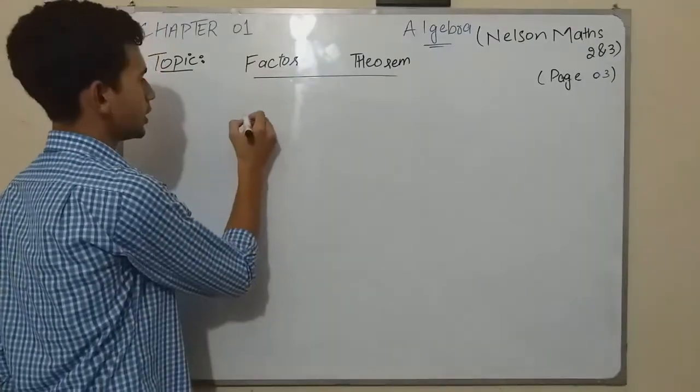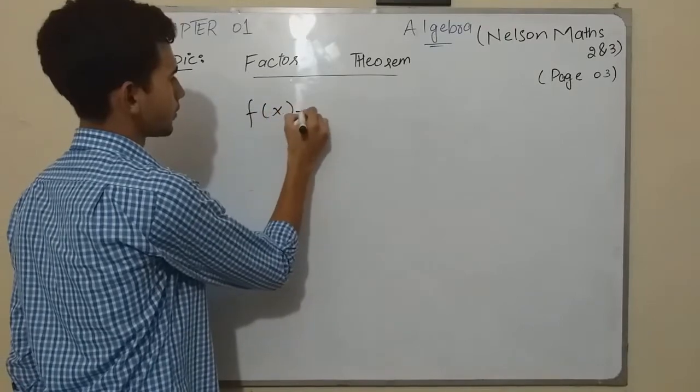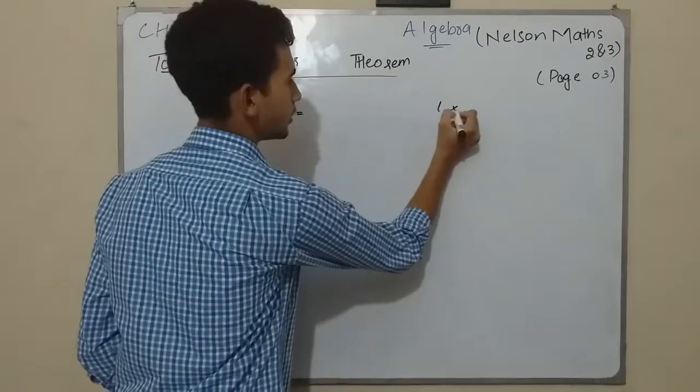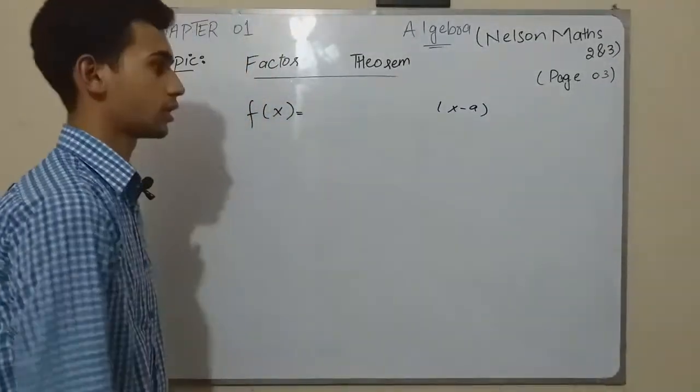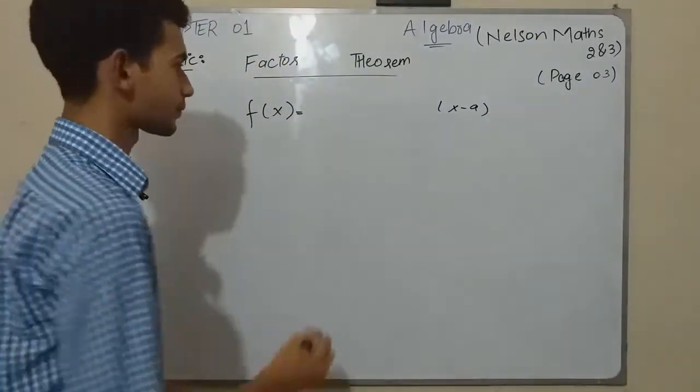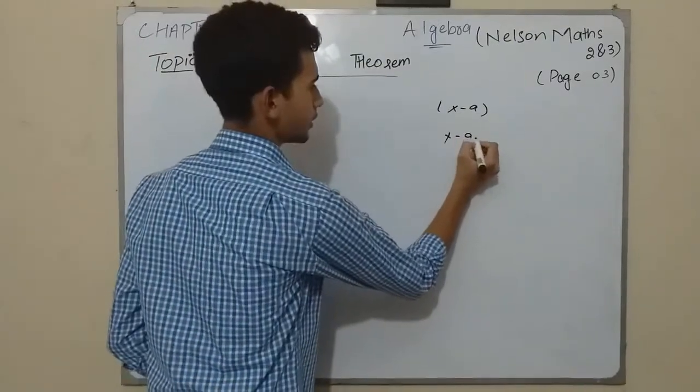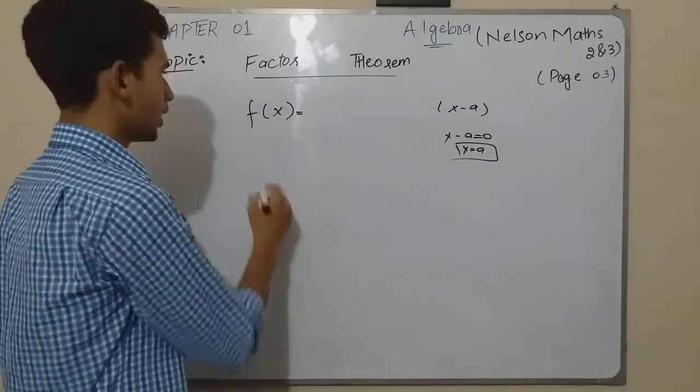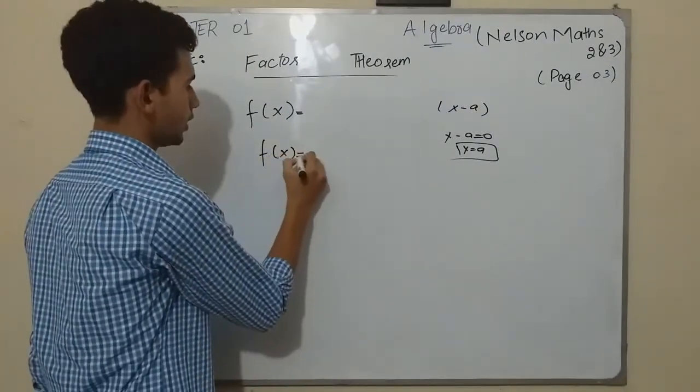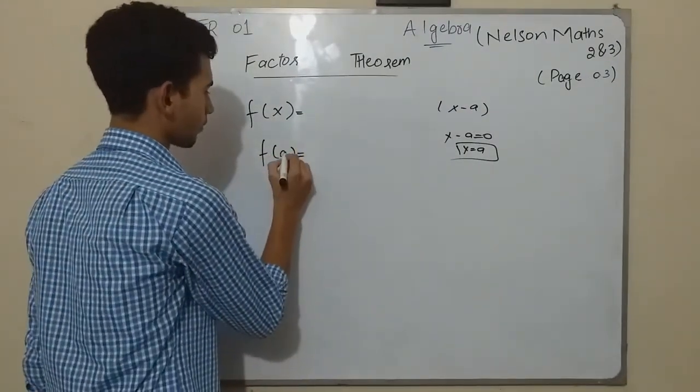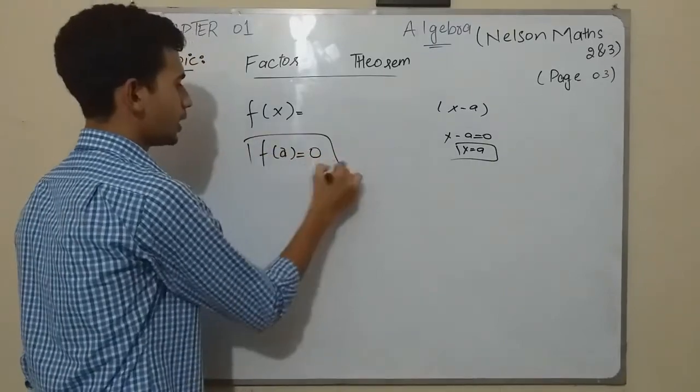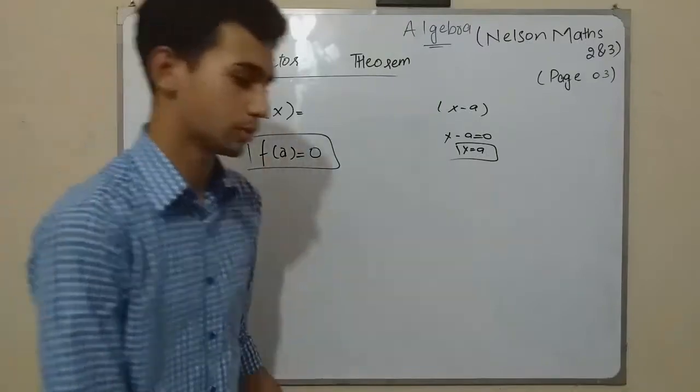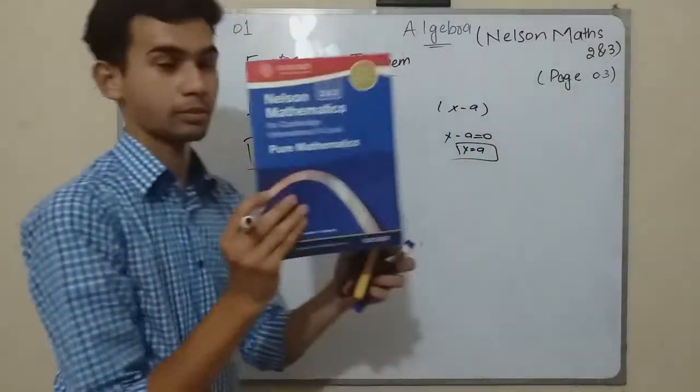Let's look towards the general form of the Factor Theorem. f(x) is a polynomial function, suppose, and this is the linear expression which we are going to put the value in. So x - a = 0, x = a. It means the value of x is a. I'm going to put this in this expression. If your remainder is 0, that is the Factor Theorem. Let's look toward an example from the book, from Nelson Mathematics.